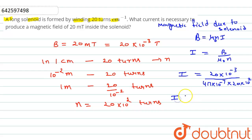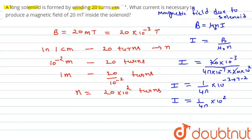So I will be equal to, we can cancel 20. So we will have 1 upon 4 pi into 10 to the power minus 3 and it will be plus 7 and minus 2. After simplification we will get I is equal to 1 upon 4 pi into 10 to the power 2.